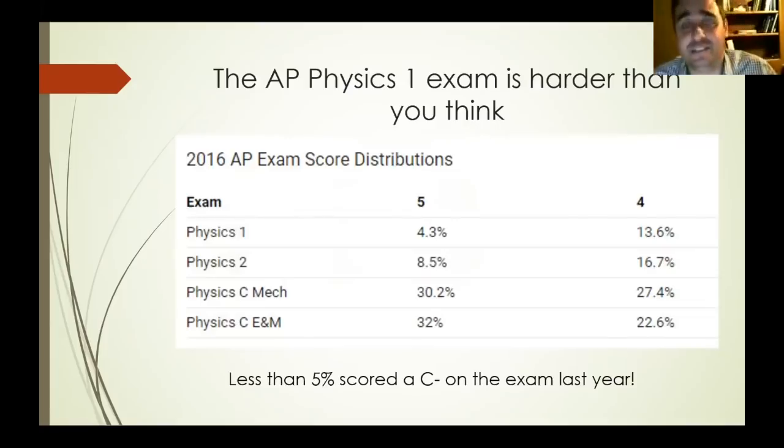Now, a lot of people think that the AP physics one test is going to be fairly easy. Maybe not too bad, but in reality, this is from the 2016 exam, a little over 4% got a five on the exam. Now that includes, or that's with only needing 70% on the test to get a five. So you essentially can get a C minus on the test and still get a five and only 4.3% got that. You'll notice only 13.6 got a four and the rest, well, you don't want to score lower than a four.